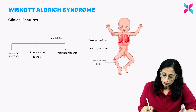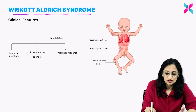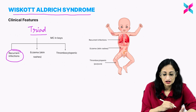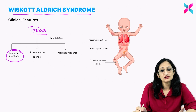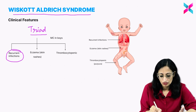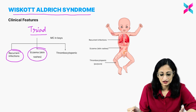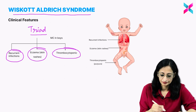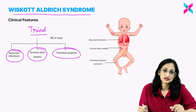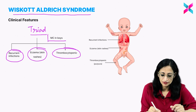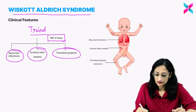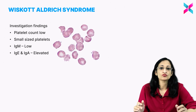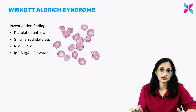The clinical features of Wiskott-Aldrich syndrome include a typical triad: recurrent infections, eczema or atopic-like skin rash, and thrombocytopenia. Because it is X-linked recessive inheritance, it is more common in boys. Children present with recurrent infections, eczema or skin rashes, and purpura or bleeding manifestations due to thrombocytopenia.